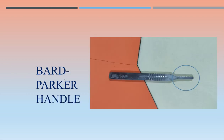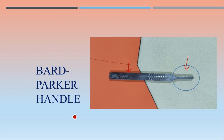This is the Bard-Parker handle — in short, BP handle. You hold the handle and the surgical blade is mounted over this area, then the instrument can be used to cut tissues and make various incisions. Two numbers are available: number three and number four. Number three is for surgical blades with smaller numbers, number four for blades number 20 and above.